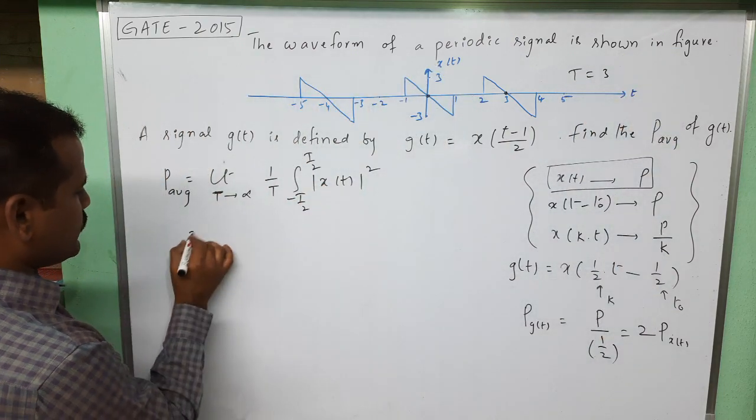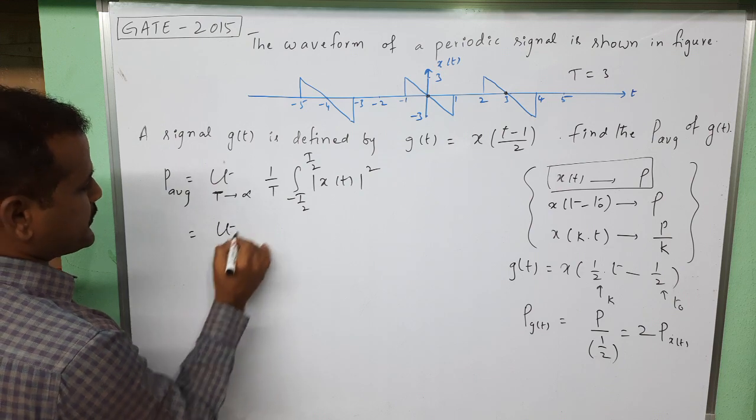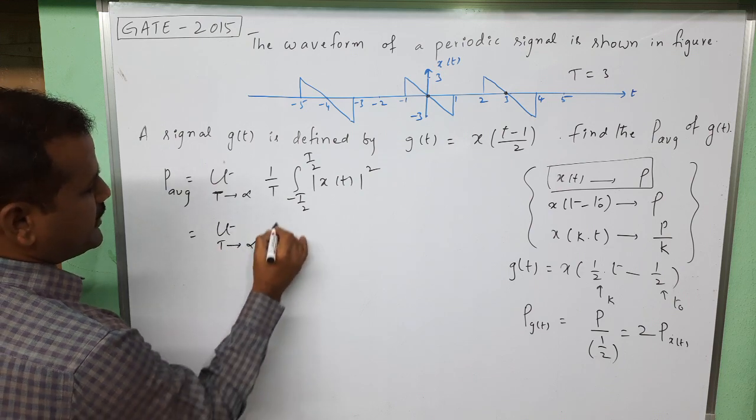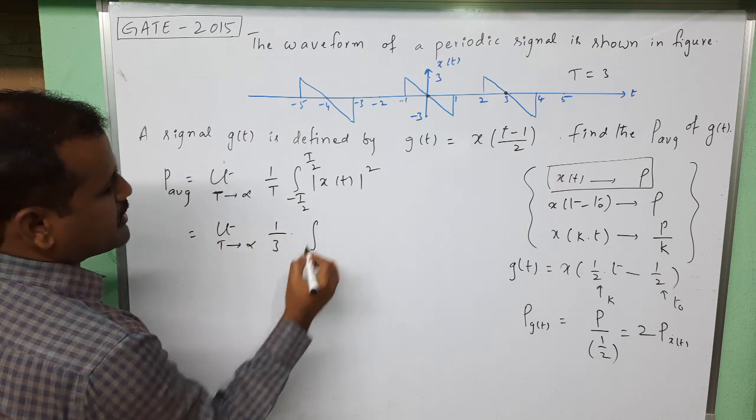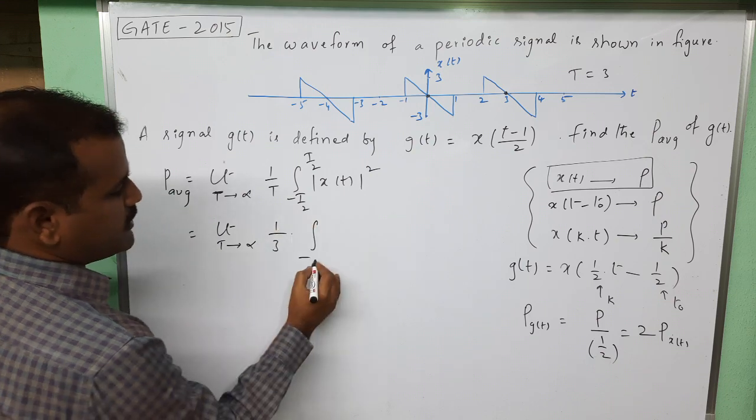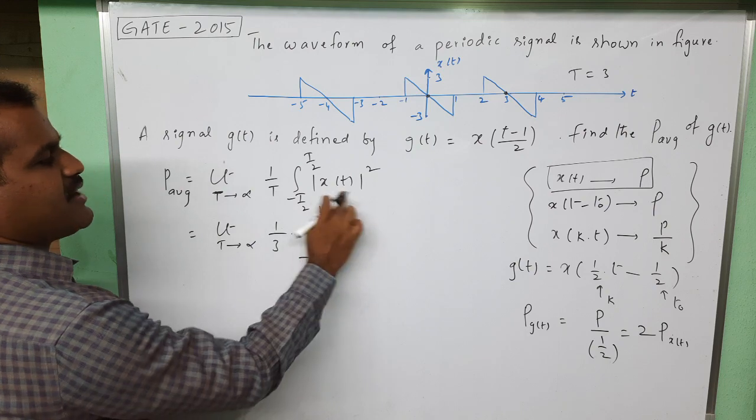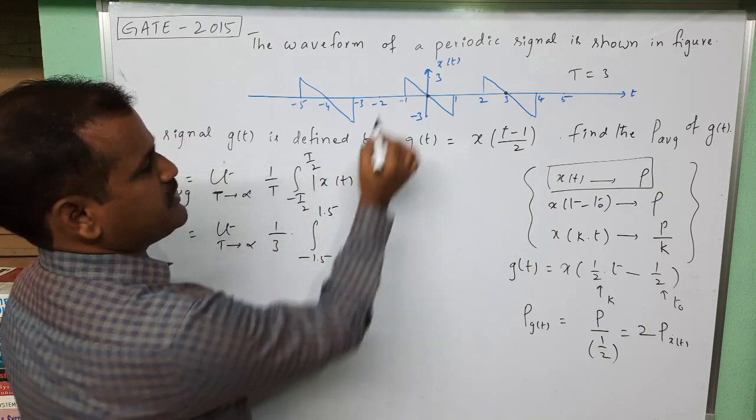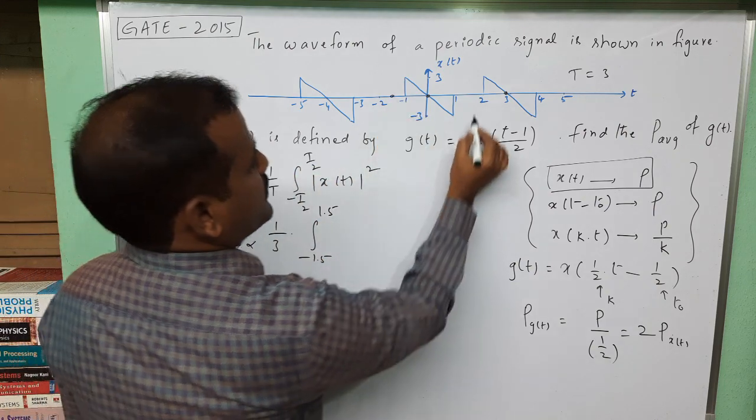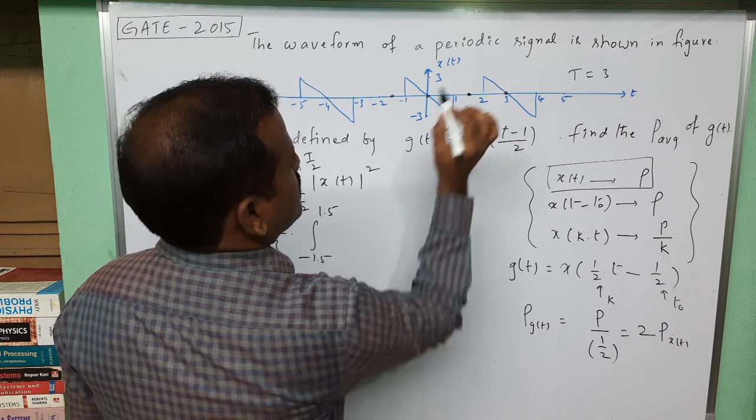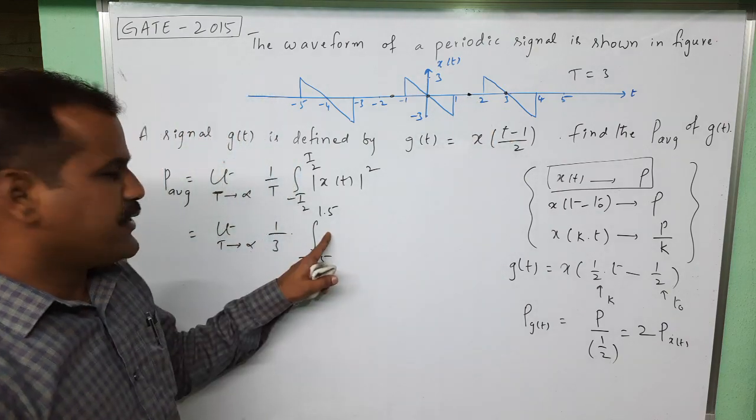If you substitute the values: limit T tending to infinity, 1/3, and the integration from -T/2 which is -1.5 to +1.5. We need the x(t) expression over this interval.